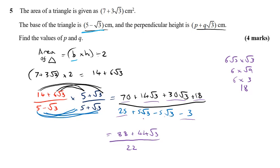Finally, I just can simplify this here. So 88 divided by 22 is just four. Now, 44 root three divided by 22 is two root three. And so we've got our answer in that required form where P would be four and Q would be two.